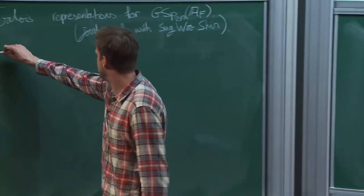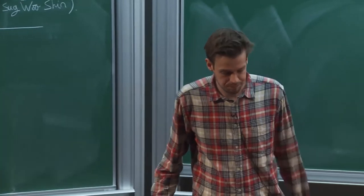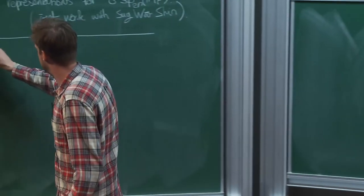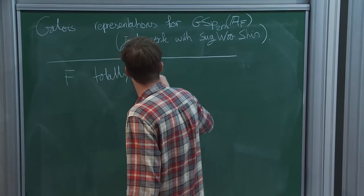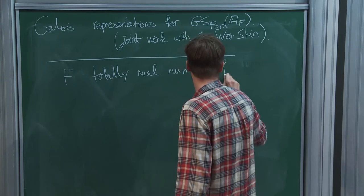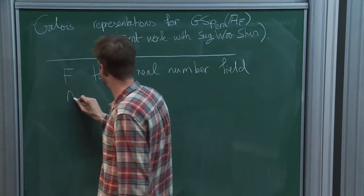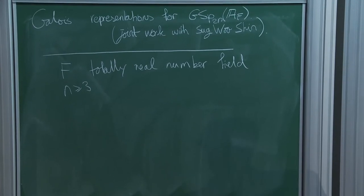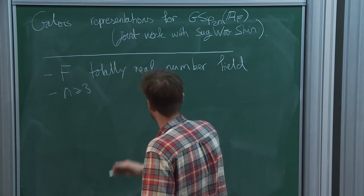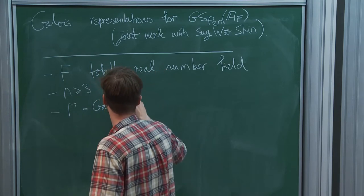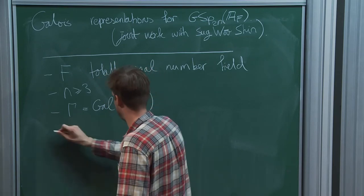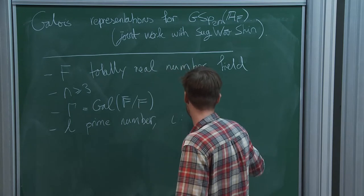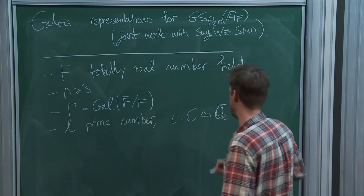I'll start with the setup, then state our theorem, and give some ideas that go into the proof. So f here is a totally real number field. We take the integer n at least 3, basically because for n equal to 2, better theorems are already known. I take gamma equal to the Galois group of f, I take L some prime number, and I will fix throughout the talk some isomorphism of C with Q-L-bar.